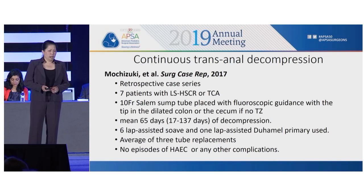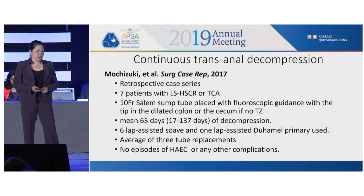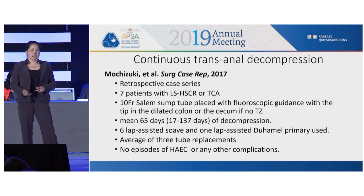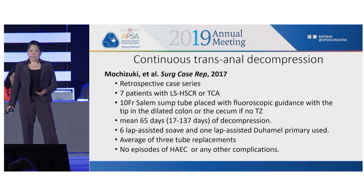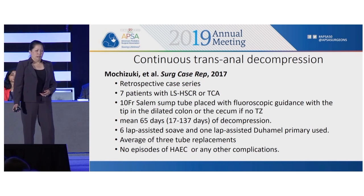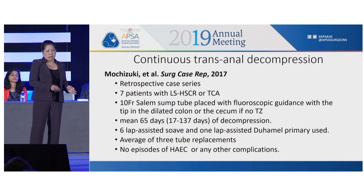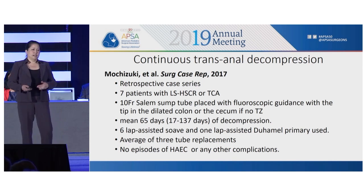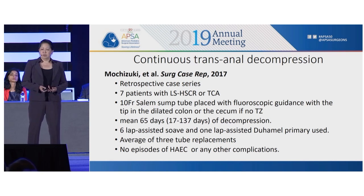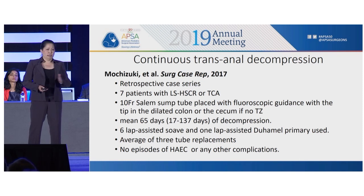One preoperative technique of interest: for patients with long-segment Hirschsprung's or total colonic aganglionosis, one study used a transanal rectal decompression tube done as an outpatient, which was able to delay surgery for a mean of 65 days — anywhere from two weeks to four months — before a definitive surgical procedure. These patients did very well with no Hirschsprung's-associated enterocolitis, no abdominal distension, and a primary pull-through with no ostomy.